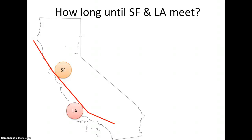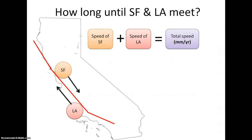We start with San Francisco and LA, which are on opposite sides of the San Andreas Fault. The San Andreas Fault is a right lateral strike slip fault, which means that San Francisco is moving south while LA is moving north along the fault. First, take the speed of San Francisco and Los Angeles from numbers 9 and 10. Add these up, since we are assuming that the motion is along the fault. This gives you total speed in millimeters per year.